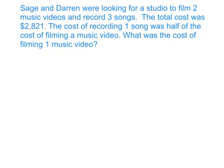Sage and Darren were looking for a studio to film two music videos and record three songs. The total cost was $2,821. The cost of recording one song was half of the cost of filming a music video. What was the cost of filming one music video?